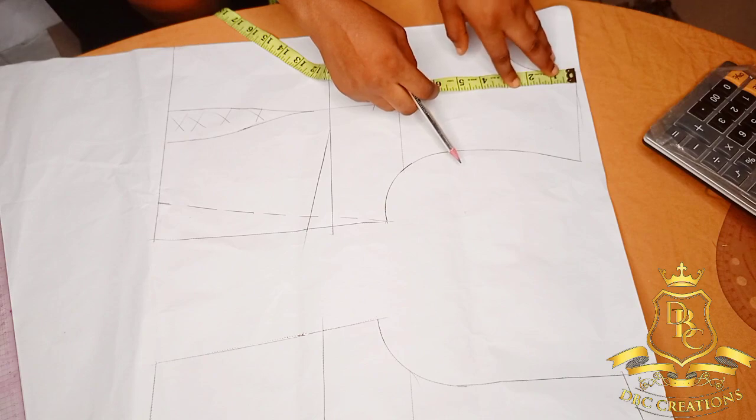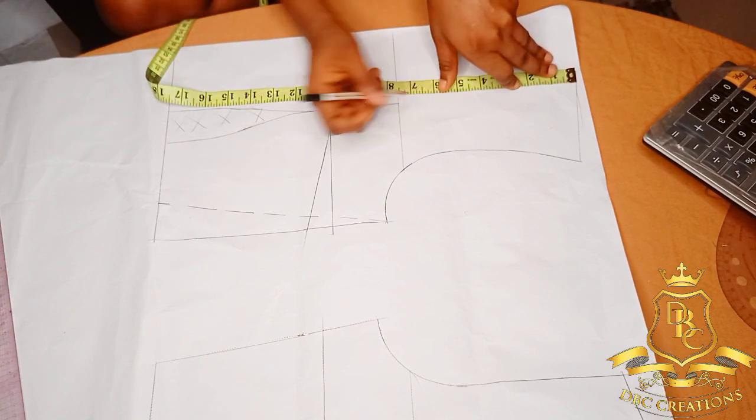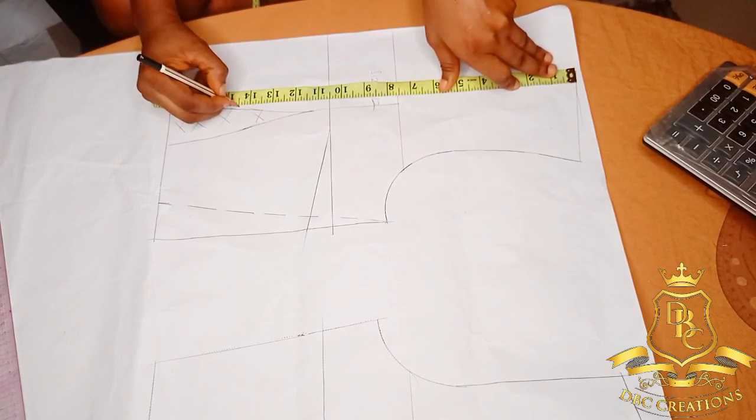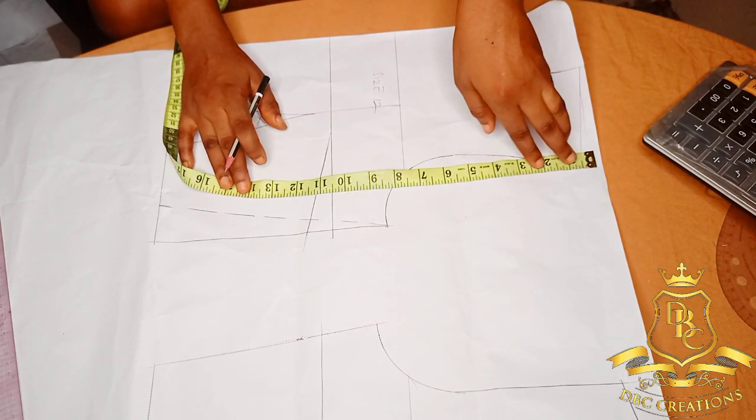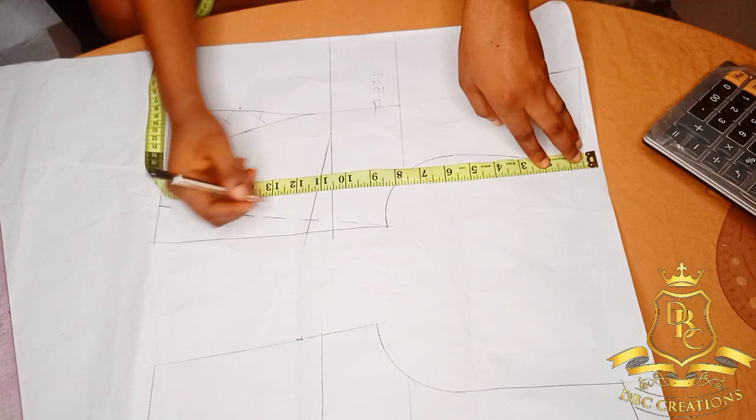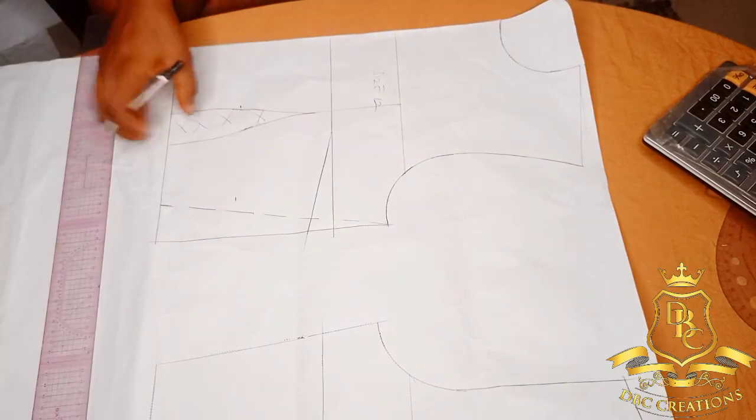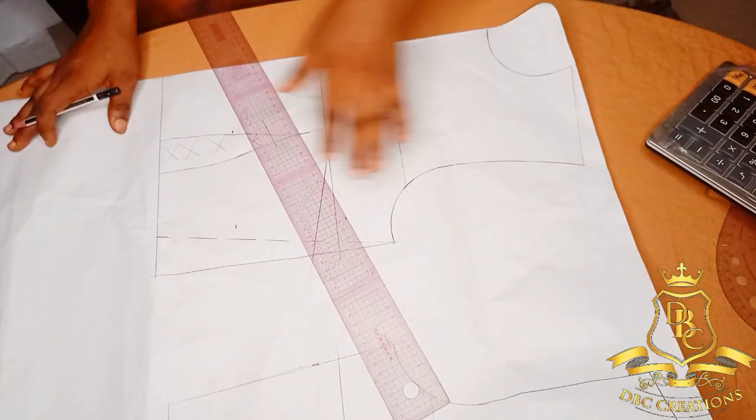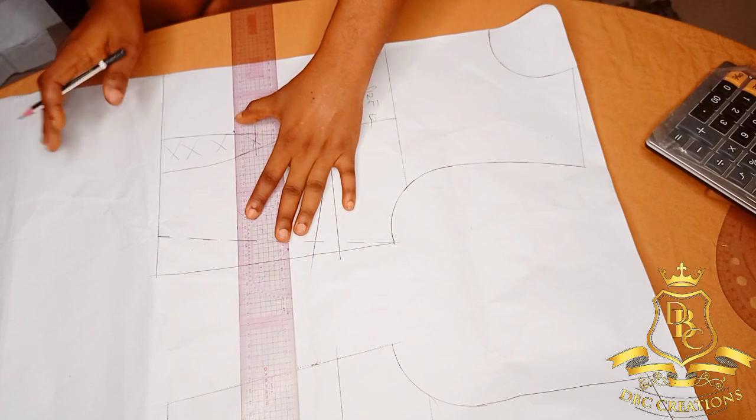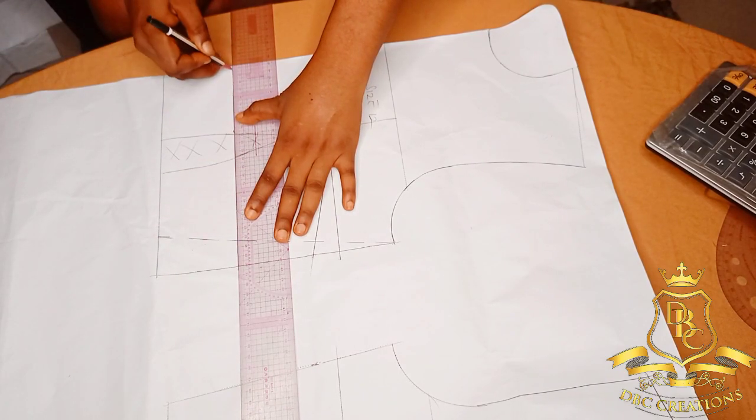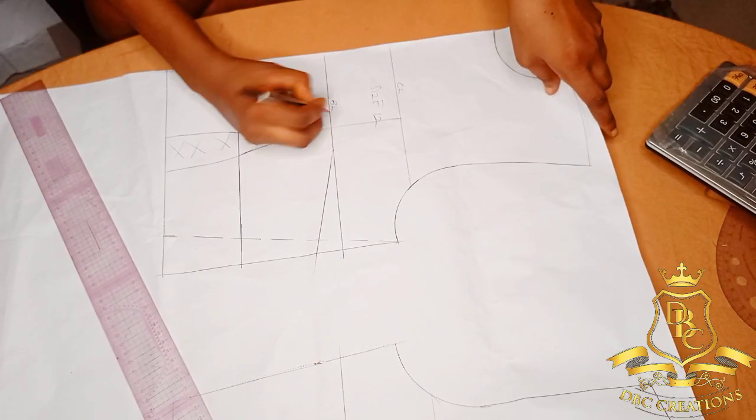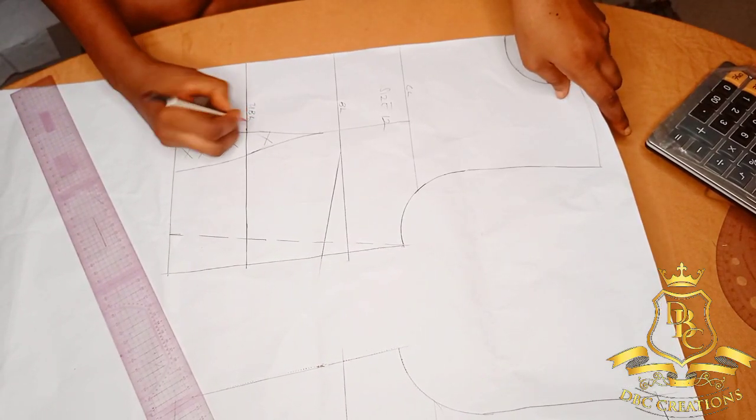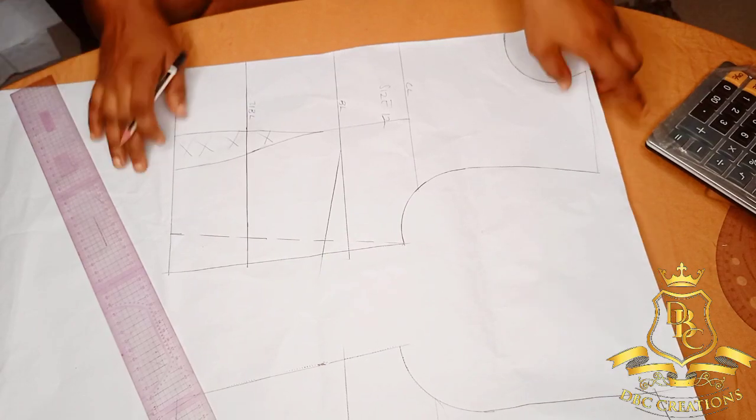So from here I'm going to measure my underbust. My underbust is 14 and a half, so I'm going to cut out for, I'm going to mark out 14 and a half all through.